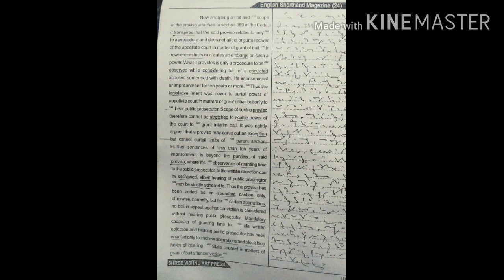Thus, the proviso has been added as an abundant caution only. Otherwise, normally, but for certain aberration, no bail in appeal against conviction is considered without hearing public prosecutor.